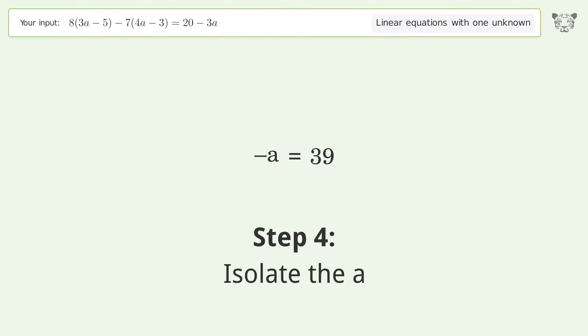Isolate the a. Multiply both sides by negative 1. Remove the 1's. Simplify the arithmetic. And so the final result is a equals negative 39.